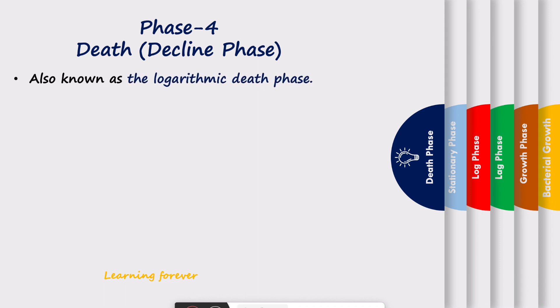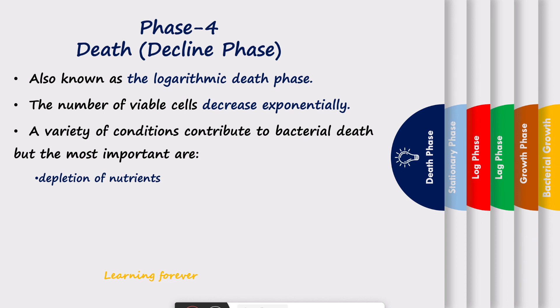Next phase is phase four, which is the death or decline phase, also known as logarithmic death phase. It is the phase where the number of viable cells decreases exponentially. A variety of conditions contribute to bacterial death, but the most important are depletion of nutrients and accumulation of toxic waste products.